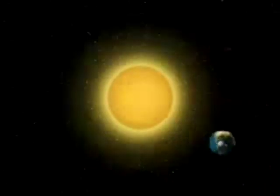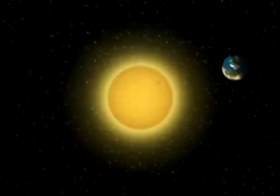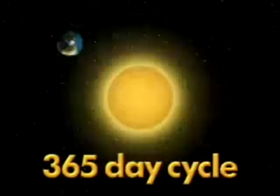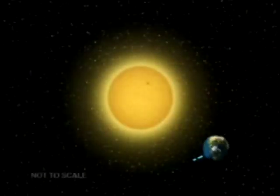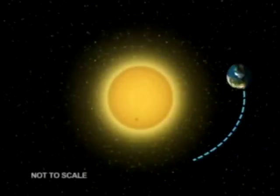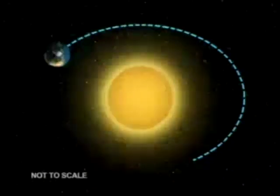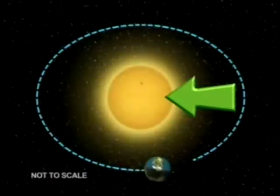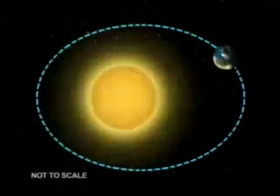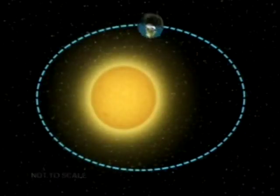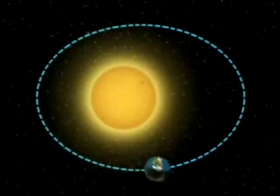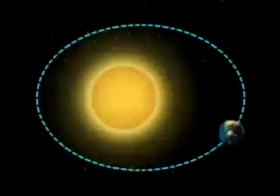The Earth orbits the sun once every year, and from this we get the familiar 365-day cycle. Earth's orbit around the sun is an ellipse — basically an oval — with the sun offset from the center of the ellipse. Does this mean that we have summer when the Earth is closest to the sun and winter when the Earth is farthest from the sun?